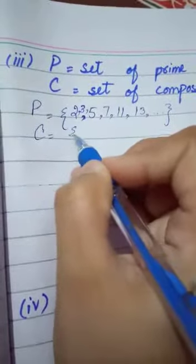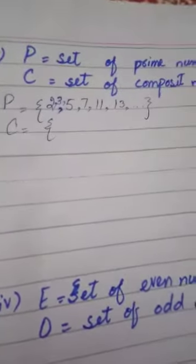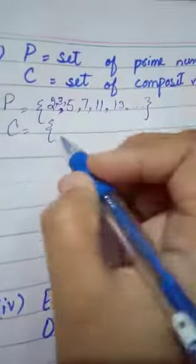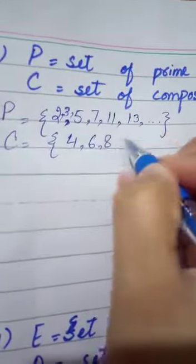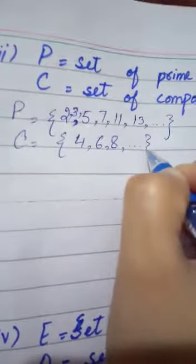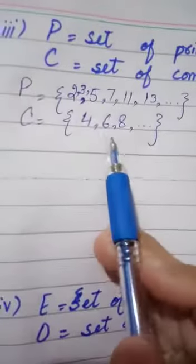composite numbers. These numbers which have more than two factors. So these have many factors. These are 4, 6, 8, and so on. This also gives 2 factors as well.